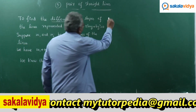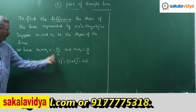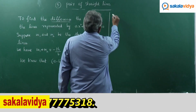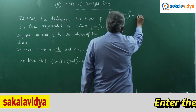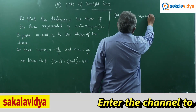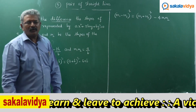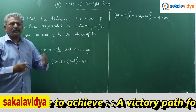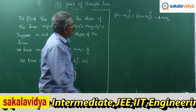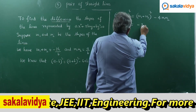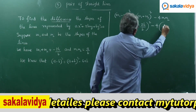Using this identity, replacing A with M1 and B with M2, we get: (M1 - M2)² = (M1 + M2)² - 4·M1·M2. Substituting M1 + M2 = -2h/B and M1·M2 = A/B, we get (-2h/B)² - 4·(A/B).